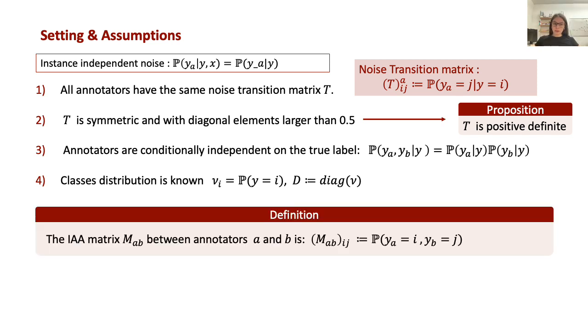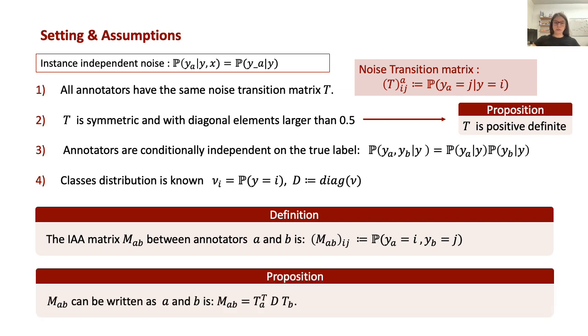The inter-annotator agreement matrix between two annotators, here defined, describes their joint distribution. By definition, it follows that it can be written in this proposition as a function of the noise-transition matrix and the class distribution matrix, and it follows also that it is positive definite.